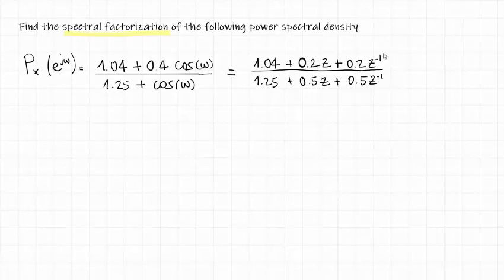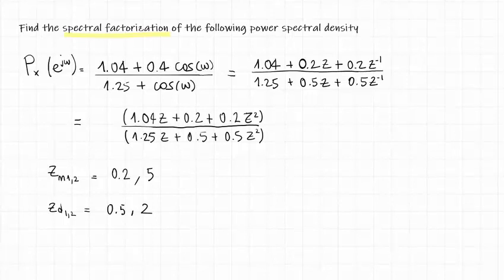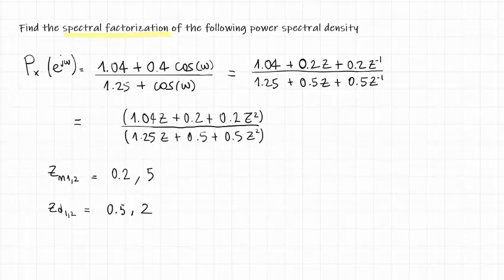The first thing we can do is to factor out Z to the power minus 1 and rewrite this as a second order polynomial in Z. Then, we can find the roots of the numerator and denominator, which are given by 0.2 and 5 for the numerator and 0.5 and 2 for the denominator. And now that we have found the roots, we can also rewrite this in this way.